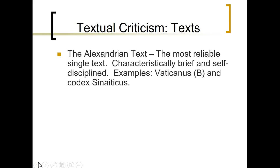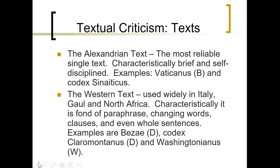I'll end by looking briefly at some of the major text types. Textual critics categorize all these manuscript varieties into groups. One group is called the Alexandrian text, generally thought of as the most reliable single text — it is very brief and self-disciplined. Examples include Codex Vaticanus and Codex Sinaiticus, two very important codices for looking at what may have been the original text. Then there is the Western text, used widely in Gaul and North Africa, which is characteristically fond of paraphrasing.